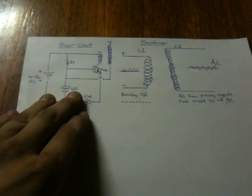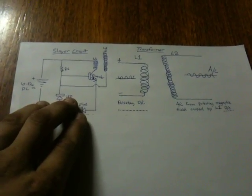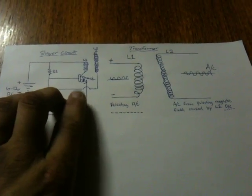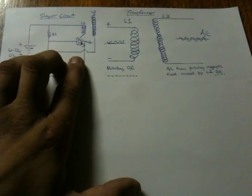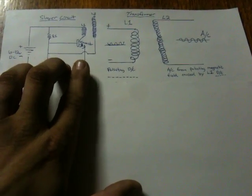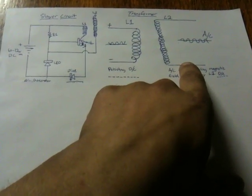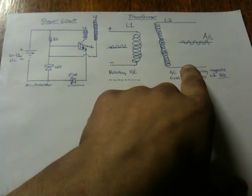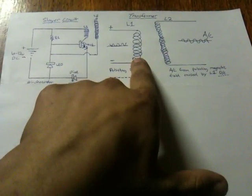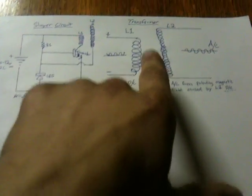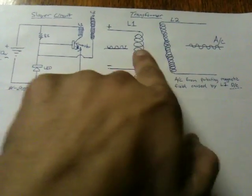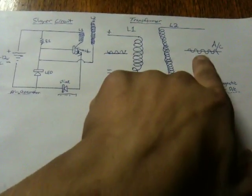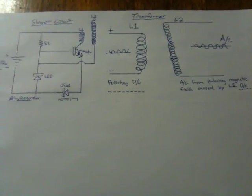That's where we get the signal. The pulsating DC is the radio signal we want to send out. But in order to increase the power in the signal, we need to turn it into an AC signal first. That's how it works with this setup — the Slayer circuit leads into a transformer circuit that makes alternating current from the pulsating DC.